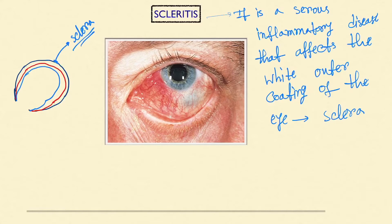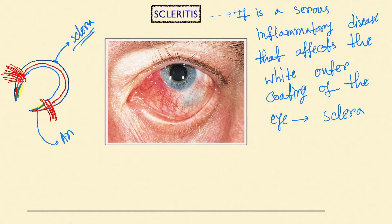Scleritis is of two types: anterior and posterior. These are the insertions of the extraocular recti muscles. If inflammation of the sclera occurs anterior to the extraocular recti muscles, this is called anterior scleritis.